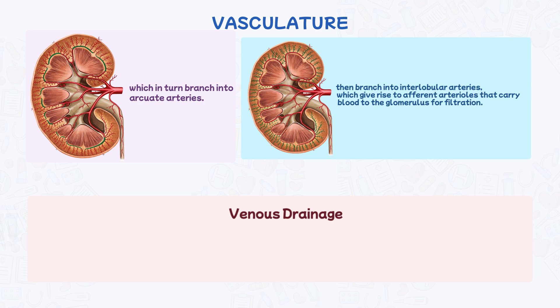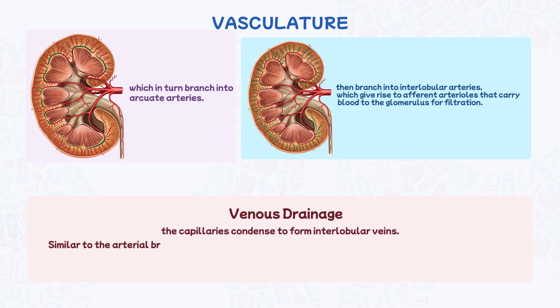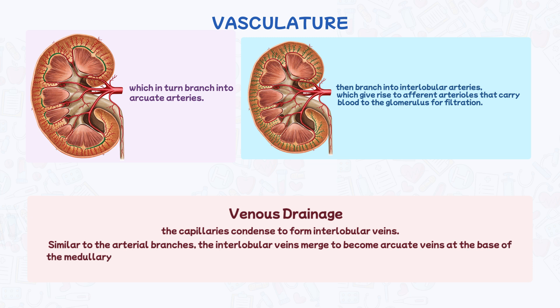Venous drainage: after leaving the nephron, the capillaries condense to form interlobular veins. Similar to the arterial branches, the interlobular veins merge to become arcuate veins at the base of the medullary pyramids.